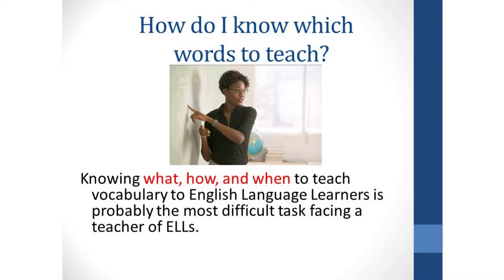Beck, McEwen, and Kukin, who wrote Bringing Words to Life, suggest that we think of words in tiers: tier one, tier two, and tier three words.